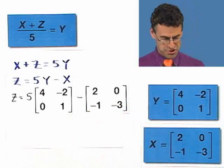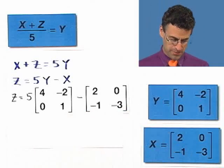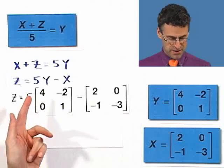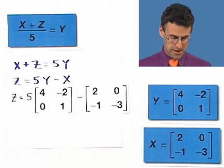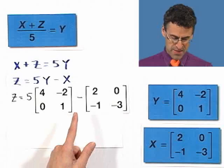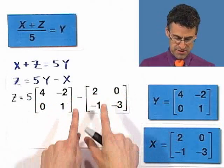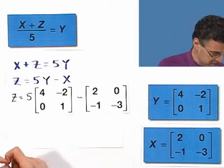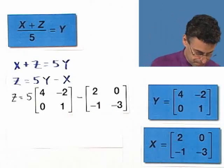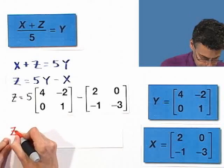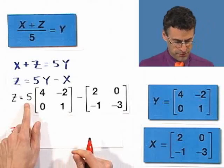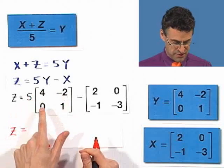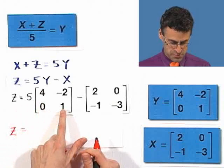So now it becomes a question involving matrices, which is kind of cool. So what does it mean to multiply a matrix by a constant 5? It means that every single entry gets multiplied by 5. And then I'm going to subtract the corresponding entries from this. So we see that z equals, I have to use a special color pen. Well, 5 times 4 is 20. 5 times negative 2 is negative 10. 5 times 0 is 0. And 5 times 1 is 5.